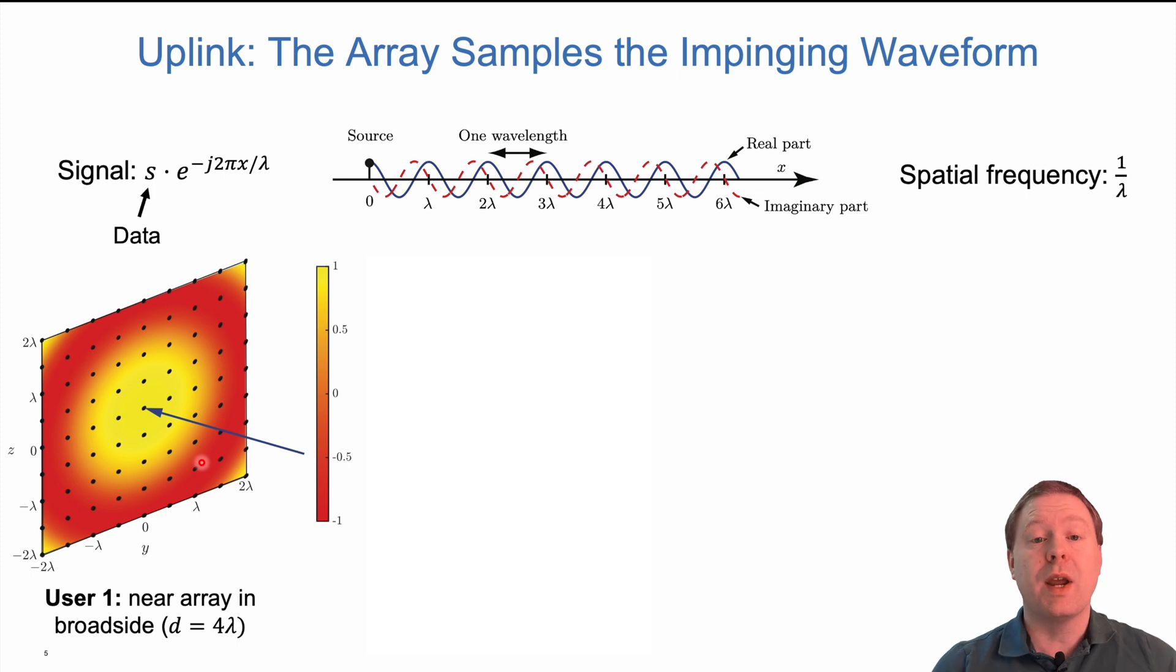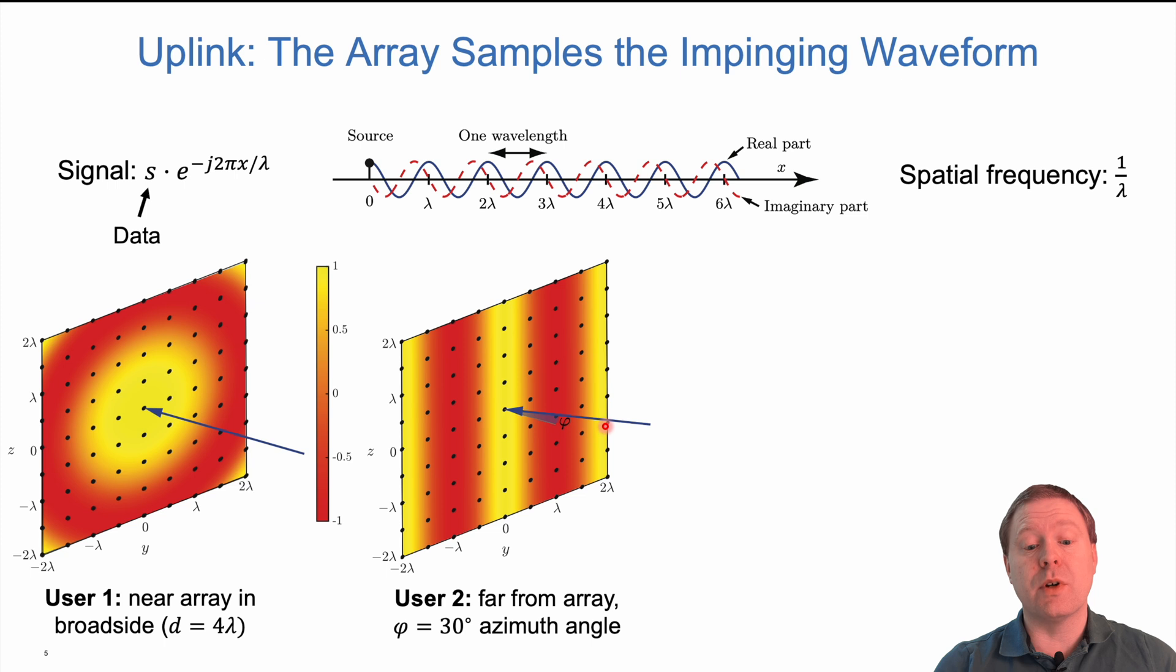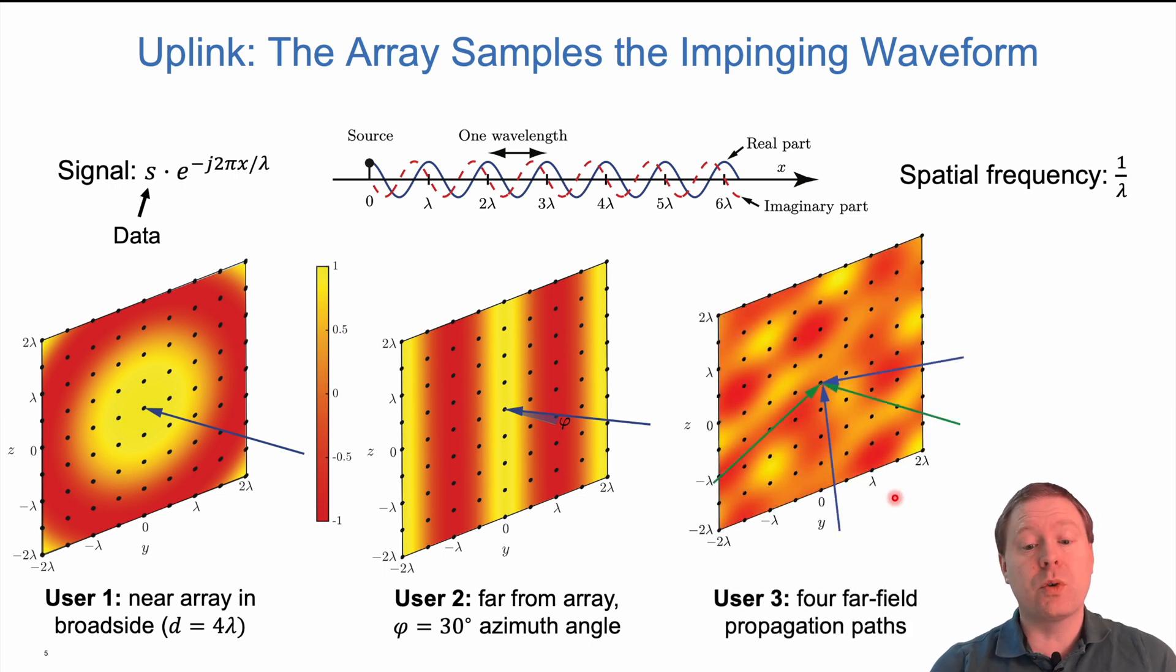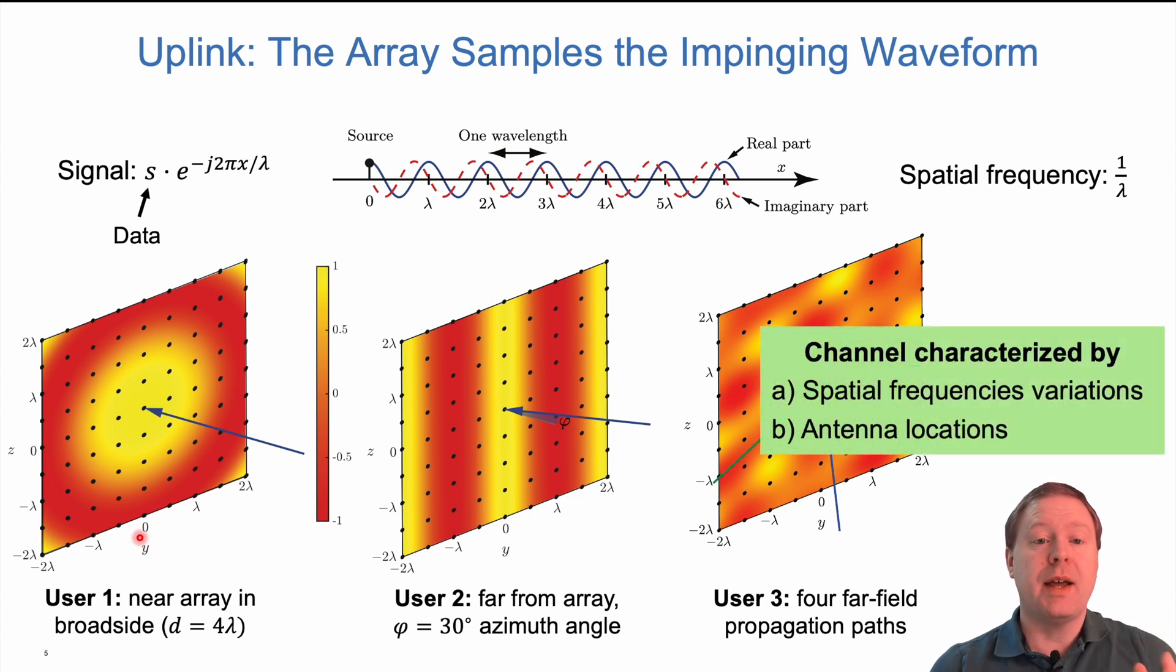If we consider another user located far away with a 30 degree azimuth angle, we see another color scheme with variations over the antenna array. This characterizes the different channels that we will see at our receiver. With a more complicated channel, we have a more complicated pattern. Regardless of what kind of channel we have, we will see a variation of the wave over the receiver. The spatial frequency variations horizontally and vertically characterize the channel and the antenna locations. The lambda over two spaced antennas sample this waveform, and this determines the channel vector.